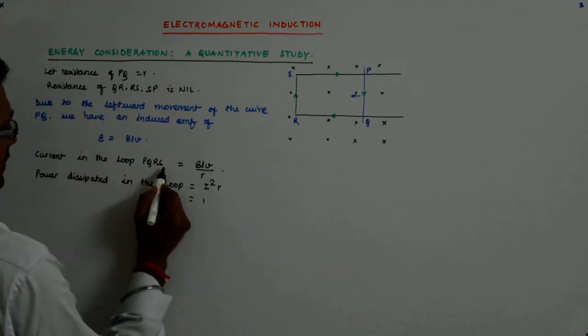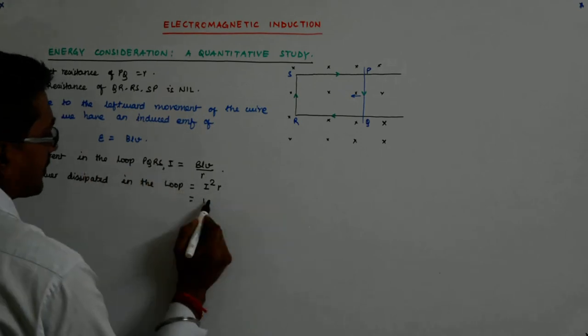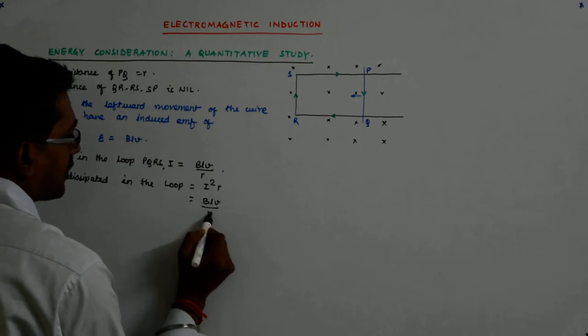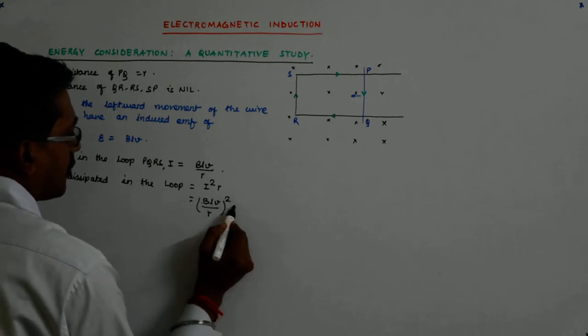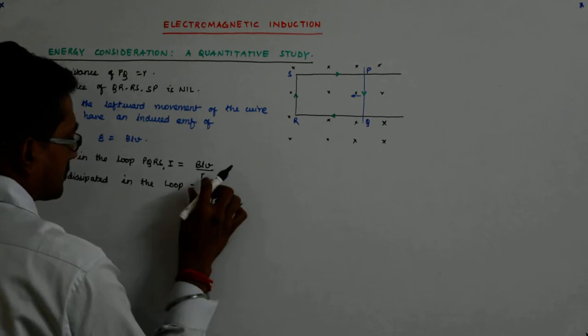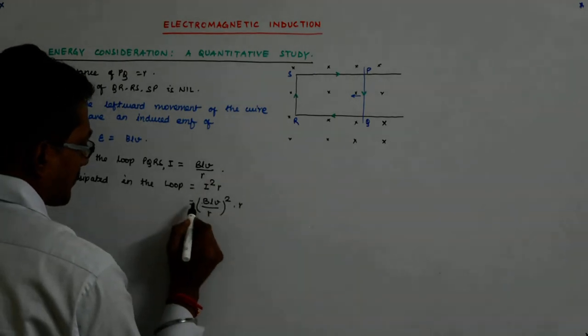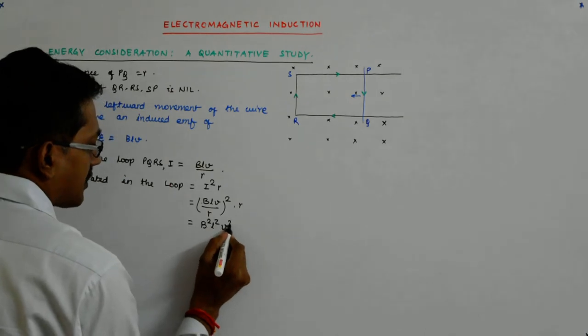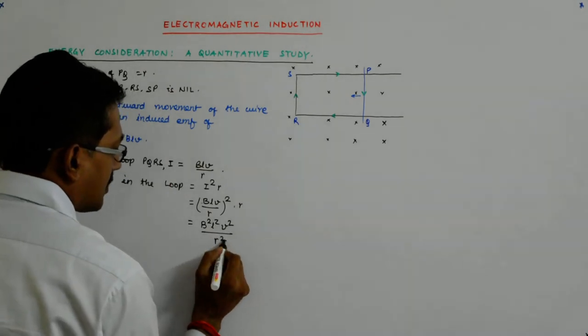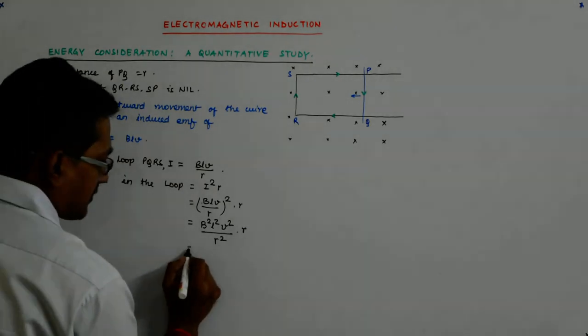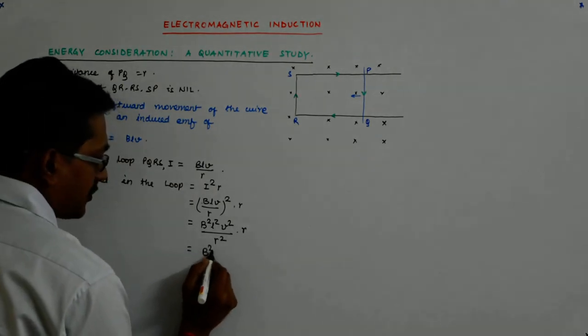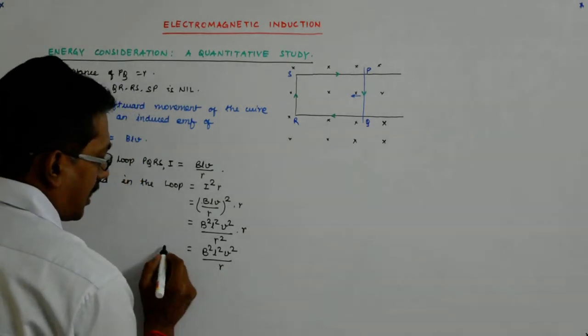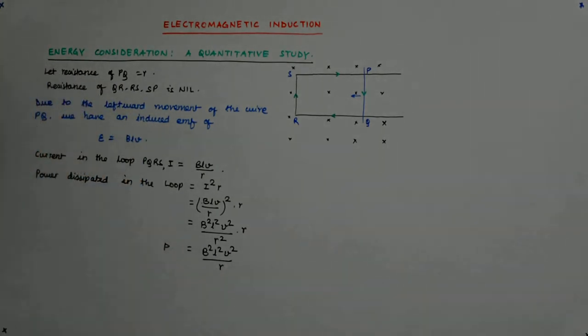So, that is current I is that. So, it is BLV upon R whole square into R, which is B square L square V square upon R square times R.